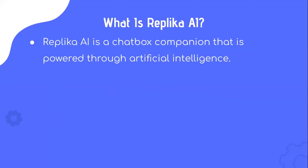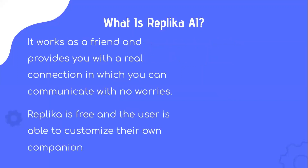Replika AI is a chatbot companion that is powered through artificial intelligence. It works as a friend and provides you with a real connection in which you can communicate with no worries. Replika is free and the user is able to customize their own companion.